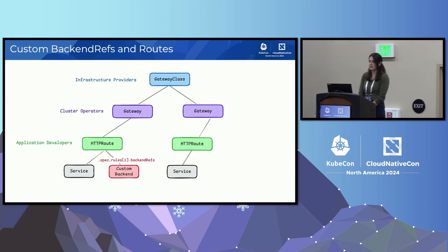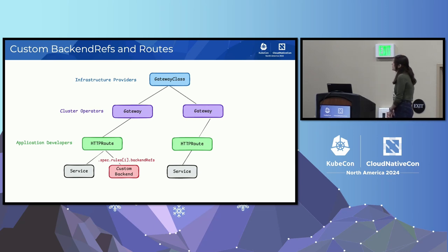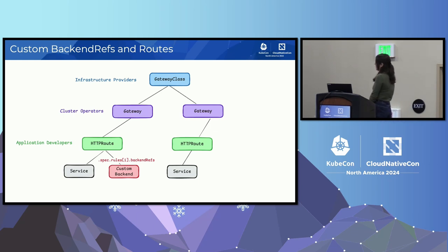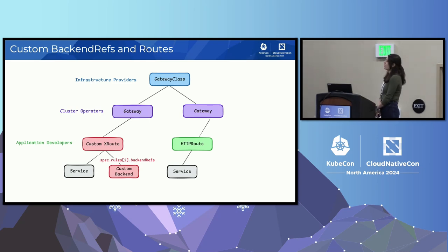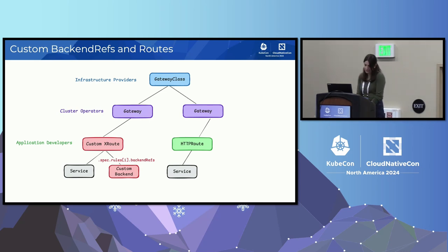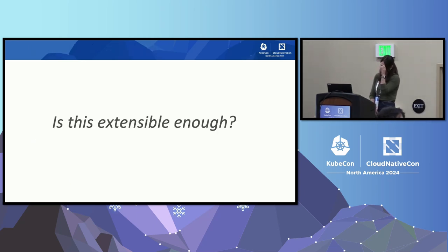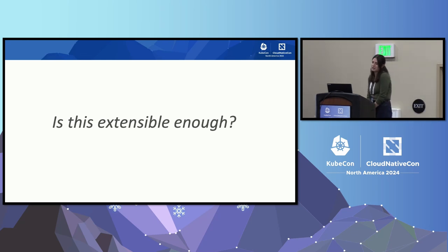You don't have to route to a service type — you can route to a custom backend type. A common example is an S3 bucket. You can also create your own type of route — if HTTP route or gRPC route doesn't work for you, maybe you have some special protocol, so long as it implements some of the common routing fields, it'll plug right into the system. So we have extensibility at every point of that hierarchy. But is it enough? I'm going to make the argument that it's not.